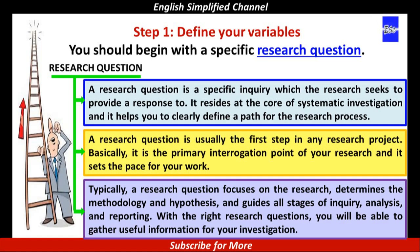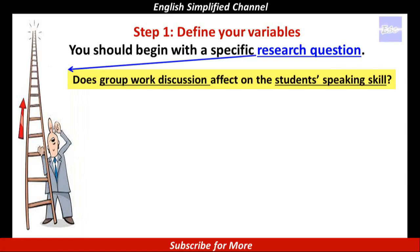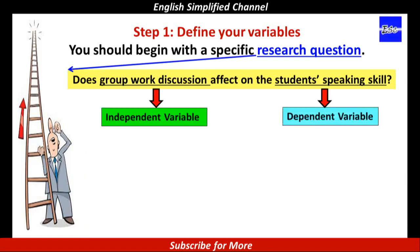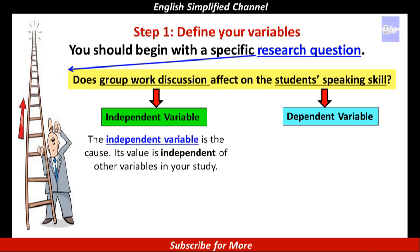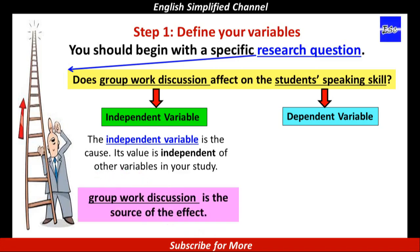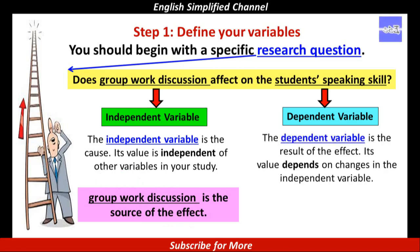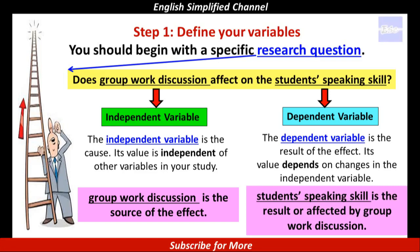With the right research questions, you will be able to gather useful information for your investigation. To understand clearly what a research variable is, consider this example of a research question: 'Does group work discussion affect the student's speaking skill?' The underlined words — group work discussion and the student's speaking skill — are termed as independent and dependent variables. The independent variable is the cause, independent of other variables; group work discussion is the source of the effect. The dependent variable is the result — students' speaking skill is affected by group work discussion.